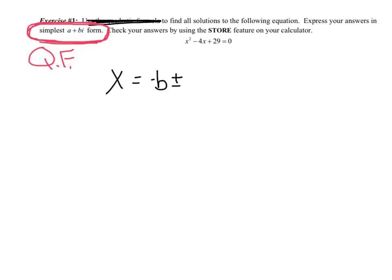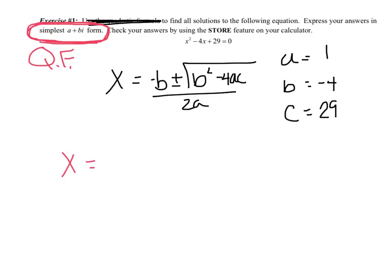x equals negative b plus or minus the square root b squared minus 4ac divided by 2a. And let's identify our a is 1, our b is negative 4, and our c is positive 29. And let's just carefully plug those in. So I'm going to go with a positive 4 plus or minus, let's see, negative 4 squared minus 4 times 1 times 29 divided by the 2a we can do in our head, and hopefully we get 2.